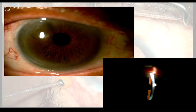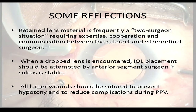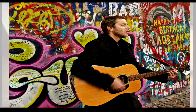Some reflections on retained lens material: it is frequently a two-surgeon situation requiring expertise and cooperation between the cataract and vitreoretinal surgeon. IOL placement should be attempted if sulcus is stable using the existing support. Larger wounds should be sutured to prevent hypotony and reduce complications during pars plana vitrectomy.